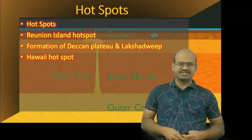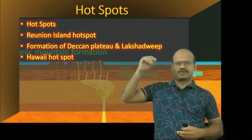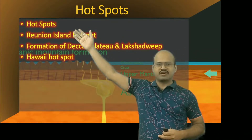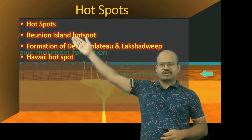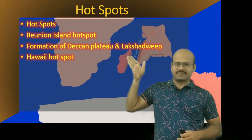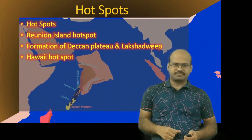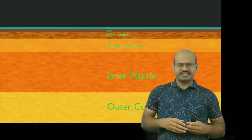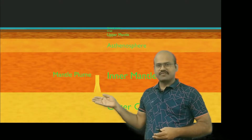Hello friends, welcome to Zeta Access. Today we will discuss about hotspots — how they are created, what kind of landforms they create, the Reunion Island hotspot and how it created the Deccan Plateau as well as Lakshadweep, and then we will see the Hawaiian hotspot.